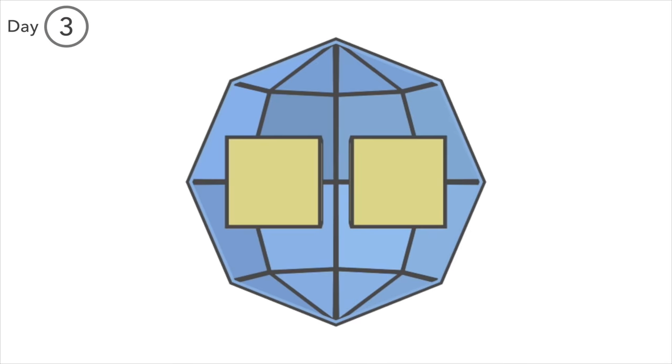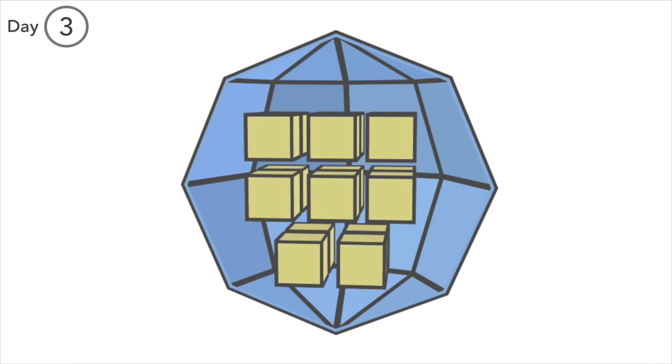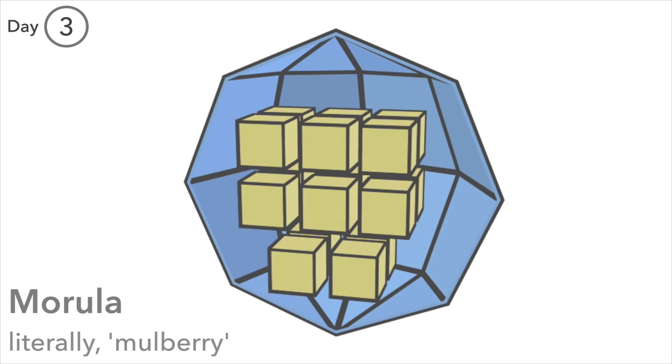Day 3. Division continues and once 16 blastomeres are present, they are together known as the morula, which means mulberry, because this bunch of cells visually resembles a mulberry.